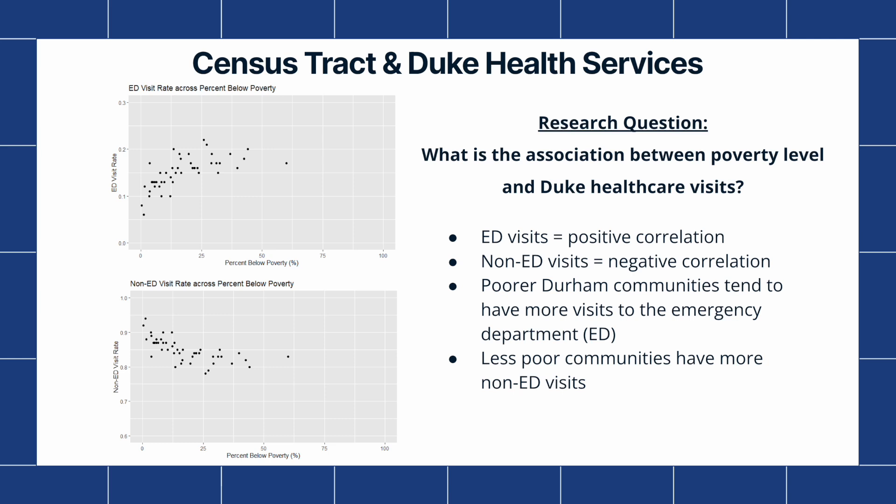After exploring the data sets and doing some analysis, we decided to formulate research questions to investigate and dig deeper into our data sets. Because we were given census tract information in the encounters data set, we wanted to see how neighborhoods in Durham, specifically those associated with incarcerated individuals, affected the usage of Duke Health services.